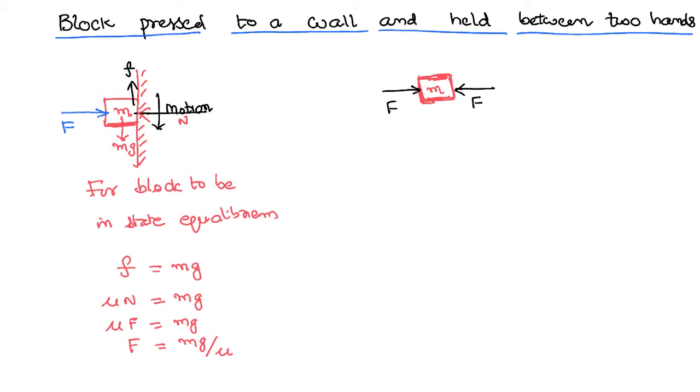We know obviously that it starts slipping between the hands because the weight is acting in the downward direction, pulling the body downward. When it is trying to slip between the hands in the downward direction, it is obvious that the frictional force acts in an upward direction.